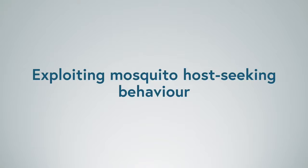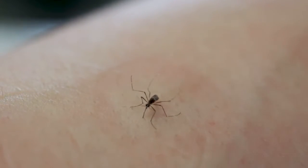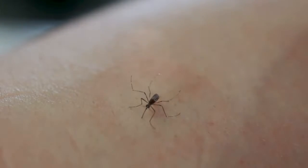During host-seeking behavior, female mosquitoes are actively trying to find a host, such as you or me, from which they take a blood meal. They do this by detecting the various chemical compounds that we and other animals naturally produce. These chemicals include carbon dioxide, which is a major component of our breath, as well as a large number of different compounds produced on our skin, such as lactic acid. These skin-derived compounds are very volatile, meaning that once they are produced on the skin, they rapidly evaporate and diffuse into the surrounding air.